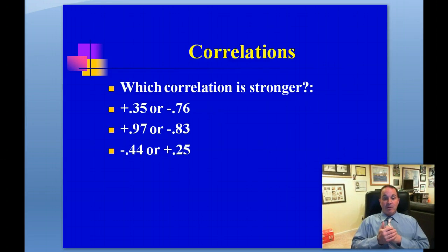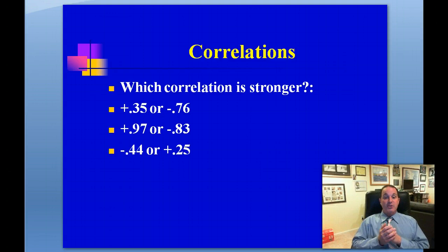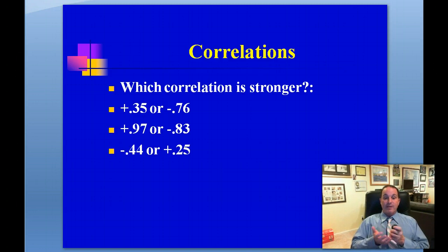Consider which correlation is stronger: positive 0.35 or negative 0.76? The answer is negative 0.76, because the sign only represents the type — the strength lies in the number, and 0.76 is greater than 0.35. Similarly, positive 0.97 is stronger than negative 0.83, and negative 0.44 is stronger than positive 0.25 because 0.44 is greater than 0.25.